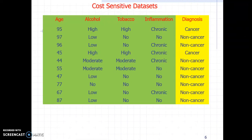If you predict a cancerous patient to be non-cancerous and thus don't give medical attention, the consequence can be very heavy — compared to predicting a non-cancerous patient to be cancerous, giving medical attention, and then realizing everything is fine. These kinds of datasets are called cost-sensitive datasets, and my previous video shows how you can build a decision forest from them by taking cost into consideration.